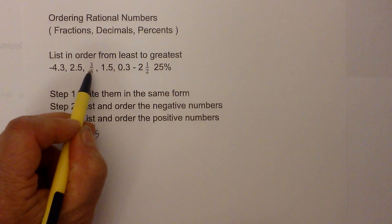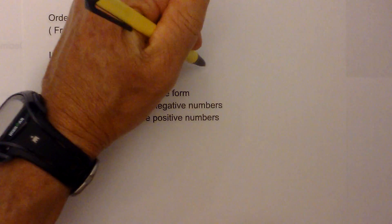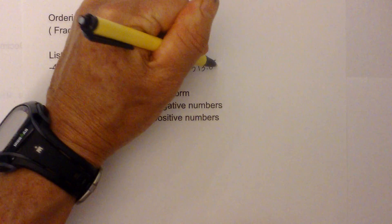Now how about 3 fifths? Well whenever you have a fraction all you have to do is divide the numerator by the denominator. So I am going to write 3 here, divide by 5, I am going to put a decimal there.